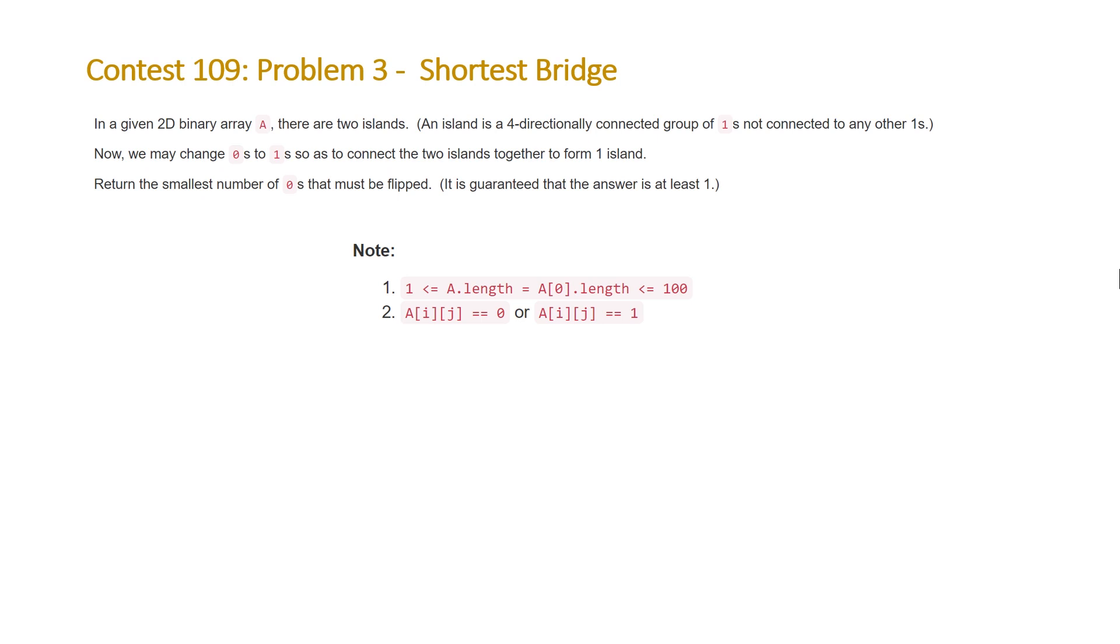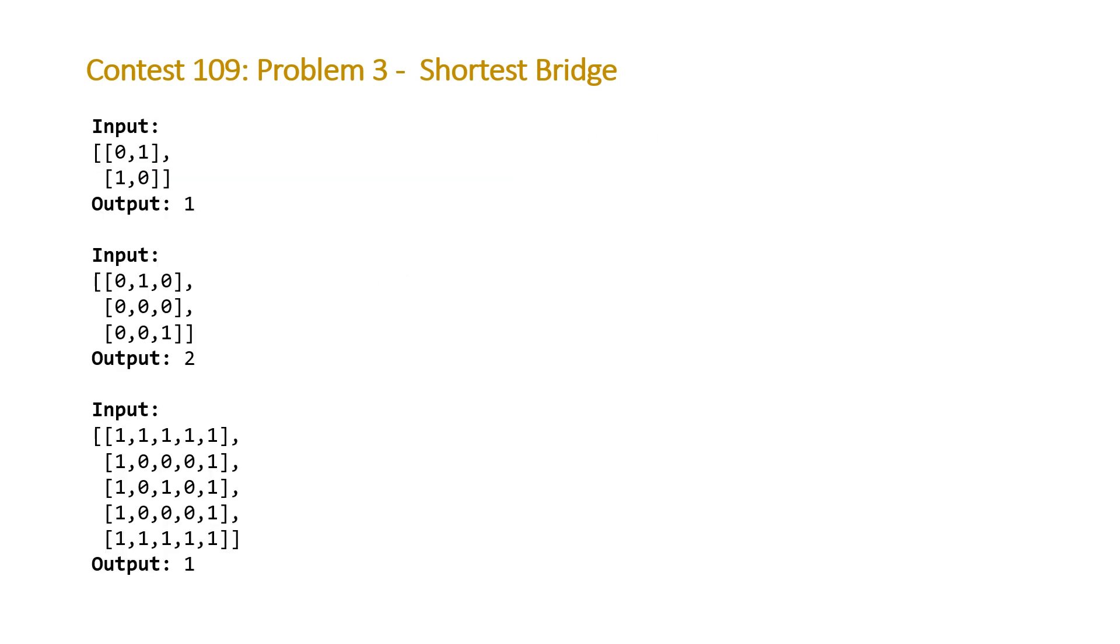Let's take a look at the examples that LeetCode provided us with. They gave us three and I've tried to format them so it's easier to see what the island looks like. The green represents the two islands and the blue represents the sea in between the islands. Note that the islands are only connected by the four directions: up, down, left, and right. These two aren't connected even though they share a corner. It's pretty clear here that you only need to fill in one of these squares to connect the two.